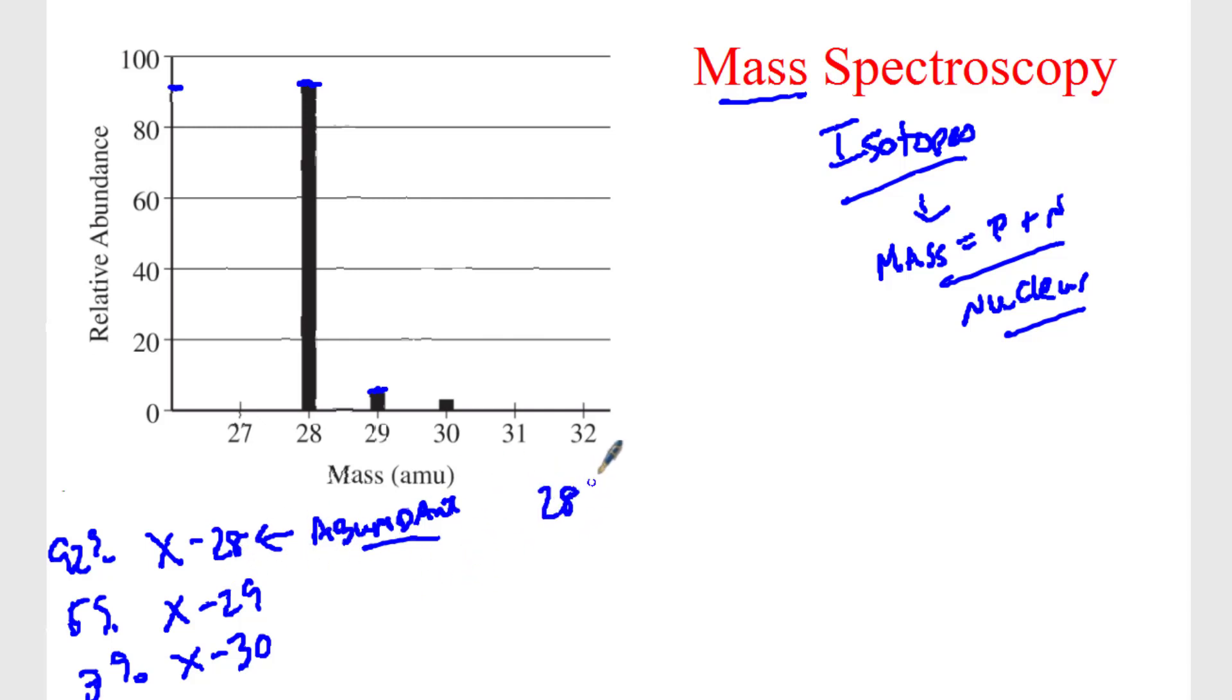So how would I find out the average atomic mass? Well, I would take the mass, which is 28, times by the percentage, 92 out of 100, or 0.92. I could call this 92 out of 100 if you wanted, or 0.92. I'm going to add the mass of 29, and that's going to be 5 parts out of 100, or 0.05. And the mass of 30, and that's 3 parts out of 100, 0.03. And when I add all of this up, I get 28.1 for an average atomic mass.